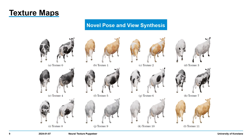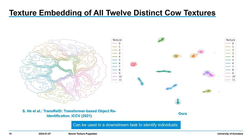Here are results including novel pose and view synthesis, and a plot of the global texture embedding of all 12 distinct cow textures for a framework called Trans3ID and our pipeline, which shows that both methods can be used in a downstream task to identify individuals.